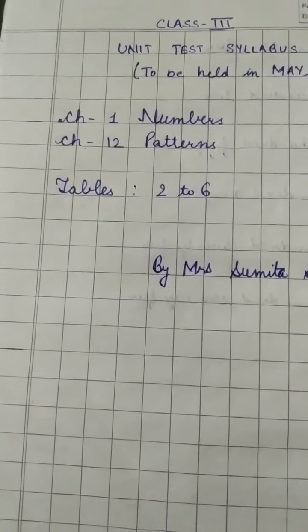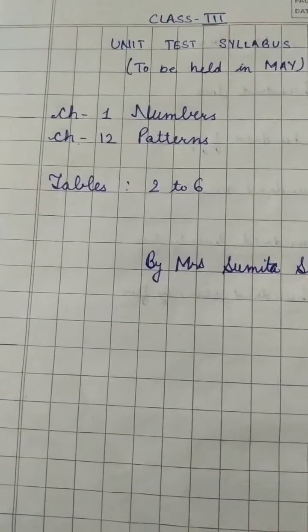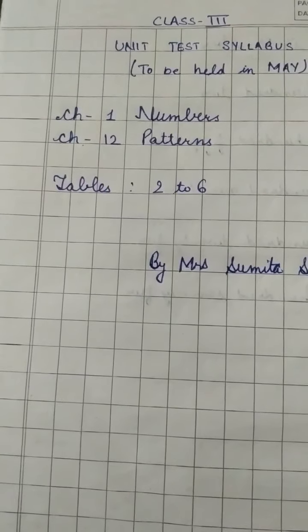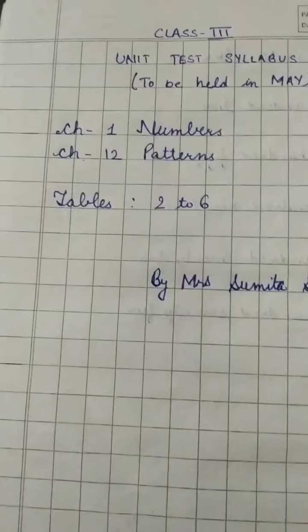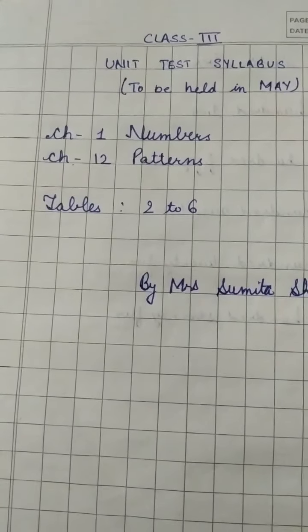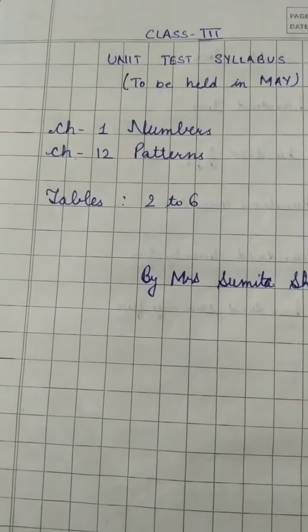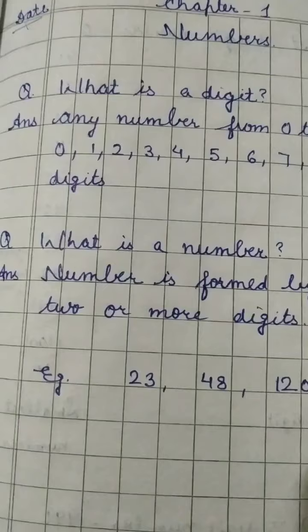Here we will be having chapter 1 numbers and chapter 12 patterns and the tables 2 to 6. You all know that tables you have to be very familiar with and you have to learn them very thoroughly because it comes as dodging in your exam.